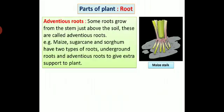Adventitious roots: some roots grow from the stem just above the soil. These are called adventitious roots. For example, maize, sugarcane and sorghum have two types of roots, underground roots and adventitious roots, to give extra support to the plant. You can observe adventitious roots of a maize stalk in this diagram.